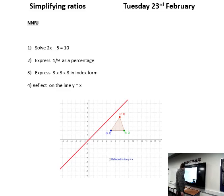So first question, 2x minus 5 equals 10. If we add 5 to both sides, we get 2x is equal to 15, and we divide by 2 both sides, we get x is equal to 7.5.